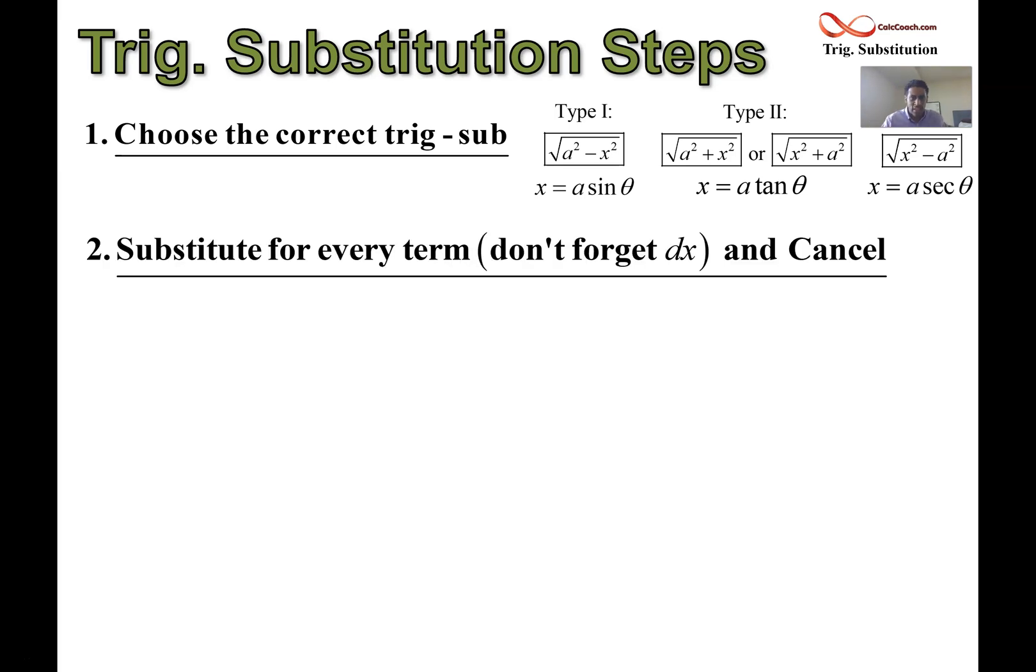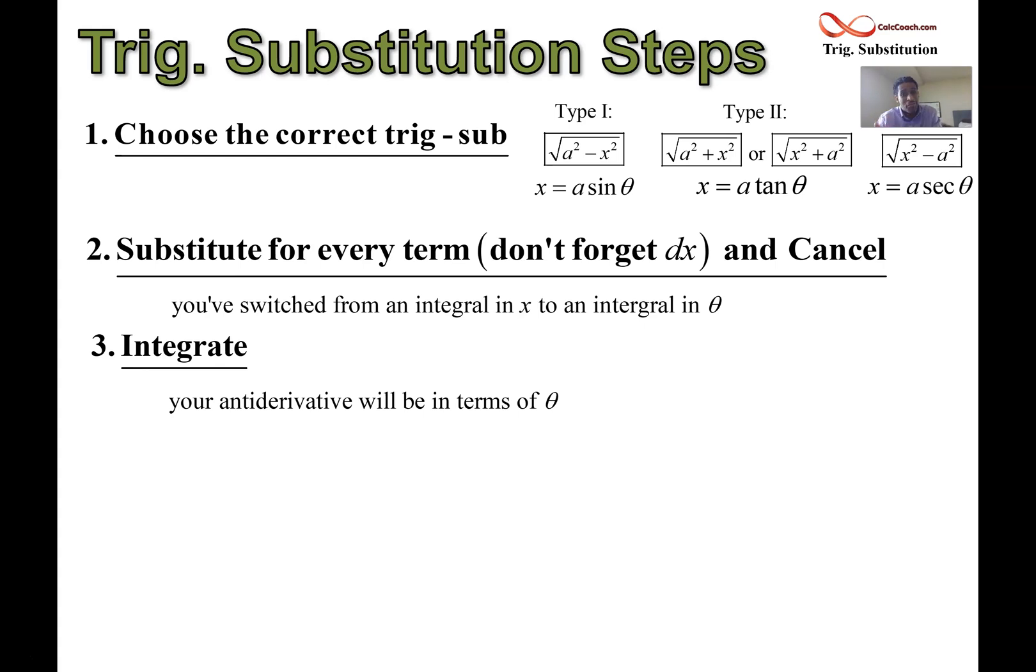Once you make that choice, then you've got to go through the substituting. The radical needs to be replaced, the dx needs to be replaced, and there might be some other things later on, somewhere else in the integral, that also need to be replaced. There might even be some cancellation that you can do. Upon doing that, then you've switched from an integral that had x in it to an integral that has theta in it. And then it should be something that you can integrate in step three. Your antiderivative will be in terms of theta, though.